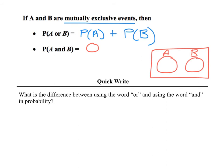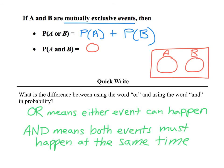Quick write: in your own words, what is the difference between using the word or and using the word and in probability? Or means that either event can happen — one event can happen or the other. And means both events must happen at the same time.